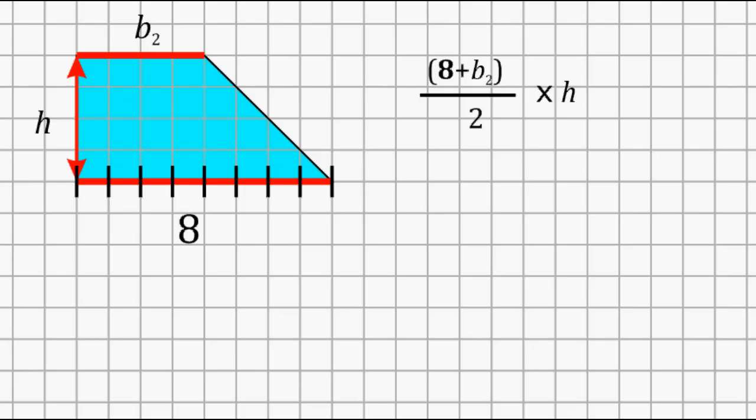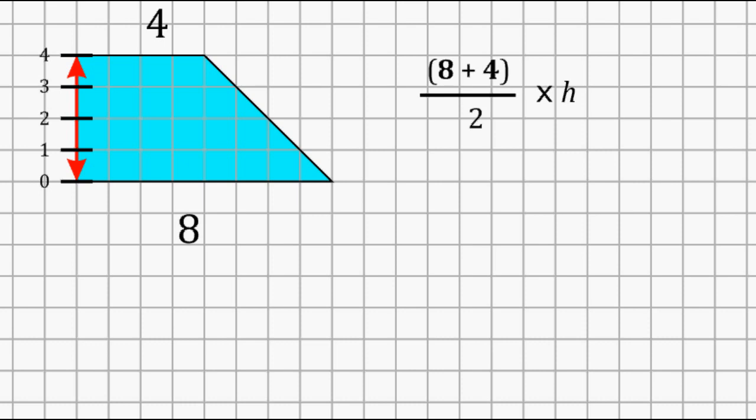Okay, now let's determine the length of the top base. The length of the top base is equal to 4. So we're going to go ahead and substitute B sub 2 with the number 4. Next, let's determine what the height of this trapezoid is. So from the bottom to the top, this side has a distance of 4. So let's go ahead and substitute h with the value of 4.